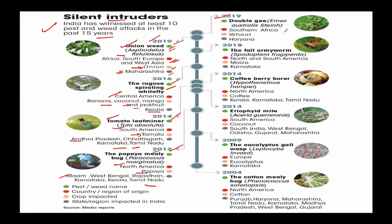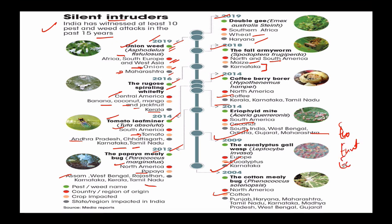Moving to 2019 - a pest originating from South Africa affected wheat in Haryana. Fall armyworm, originating from North and South America, affected maize with major impact in Karnataka. In 2014, coffee berry borer - origin North America - affected coffee fruit in Kerala, Karnataka, and Tamil Nadu. In 2009 and 2004, we saw pests affecting cotton, eucalyptus, and coconut plants that came to India from abroad, affecting many states and damaging our economy, environment, ecosystem, and ecology.